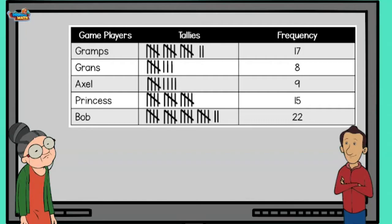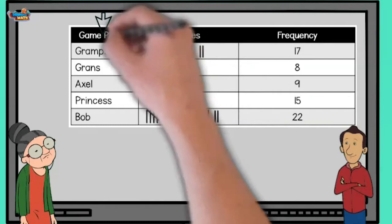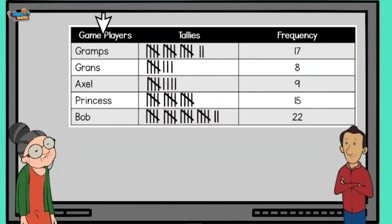What we have here is a frequency table. All the cool kids are using them. This column shows us the names of the people playing the game. As you see, Gramps, Grands, Axel, Princess, and Bob were playing.